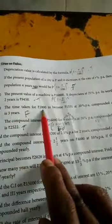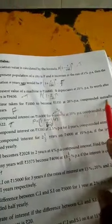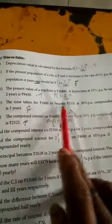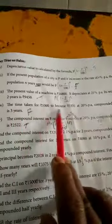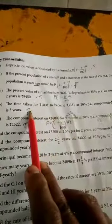Here, the time taken for ₹1000 to become this answer, compound annually. So for 3 years... No, the years is changing. Okay, so this is a false statement.